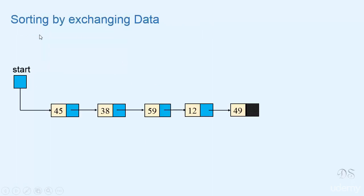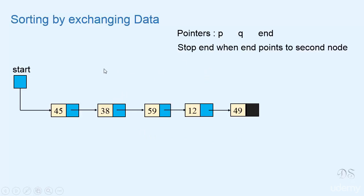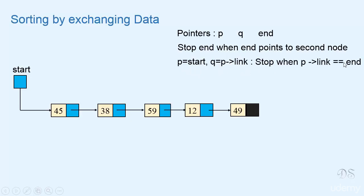To sort a linked list using bubble sort by exchanging data, we'll take three pointers p, q, and end. This pointer end will initially be null in the first pass. In the second pass it'll point to this node, in the third pass it'll point to this node, and in the fourth pass it'll point to this node. We need only four passes to sort a list of five elements. When end points to the second node we'll stop. At the start of each pass we'll initialize p with start and q with p-link, and we'll move these pointers p and q forward and stop when p-link becomes equal to end. We'll compare the info parts of nodes pointed by p and q, and if the info parts are out of order we'll swap them.